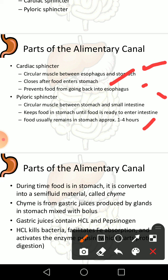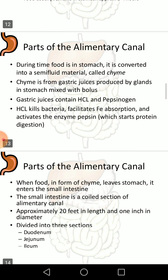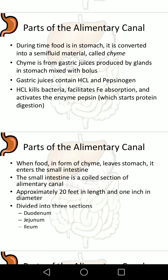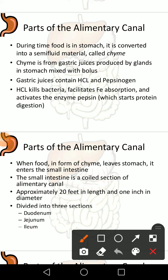Food usually remains in the stomach for approximately one to four hours. During this time, it is converted into a semi-fluid material called chyme. Chyme is formed from gastric juices produced by glands in the stomach mixed with the bolus. Gastric juices contain HCl and pepsinogen, which upon contact with food are converted into the active form pepsin, which digests proteins.